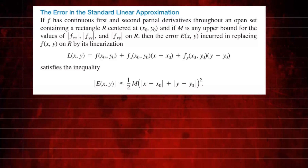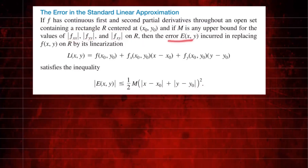In this video, we're going to talk about the error bound for a linear approximation in two variables. Suppose that we have a function f(x,y) which has first and second partial derivatives that are continuous on an open set containing a rectangle centered at (x₀, y₀). We assume that M is the upper bound for the values of the second partial derivatives of f with respect to x, y, and the mixed partial on R. Then the error is going to be determined by this formula.